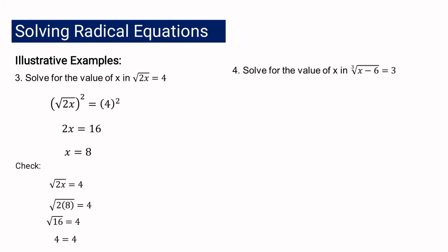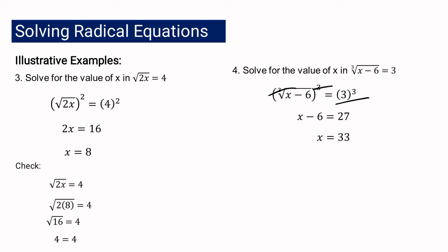For example 4, we have: cube root of (x minus 6) equals 3. We can eliminate the radical sign by raising both sides to the index, which is 3. The radical cancels out, leaving x minus 6 on the left, and 3 cubed equals 27 on the right. Using the addition property of equality, x equals 33.